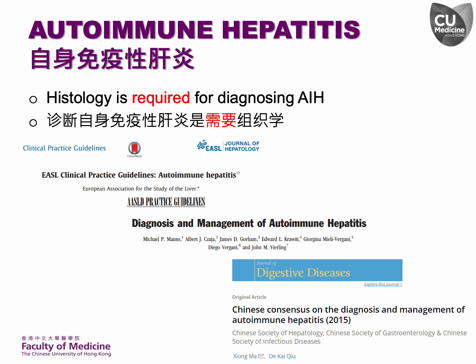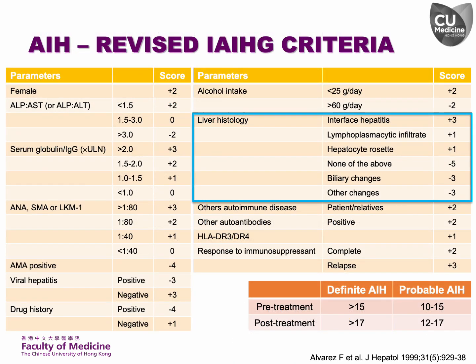Let's briefly discuss the diagnosis of autoimmune hepatitis. Professional organizations in Europe, the United States, and mainland China recommend that histological examination is necessary for diagnosing autoimmune hepatitis. The revised international autoimmune hepatitis group scoring system combines clinical, biochemical, serological, and histological data to provide a score that helps determine the likelihood of autoimmune hepatitis.